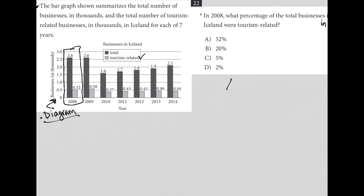So percentage, right, is part over whole times 100. That gets your percent. So what's the part that we care about? In fact, this question first of all gives us the whole, right? The total number of businesses in Iceland. So we know that our denominator is going to be total number of businesses.